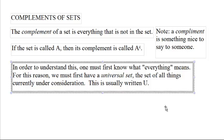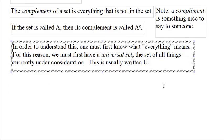Anyway, in order to properly understand what a complement is, one must first know what everything means. You know, everything that is not in the set, well, where do we draw the everything from? For this reason, we must have a universal set, the set of all the things currently under consideration, and this is usually written as U.